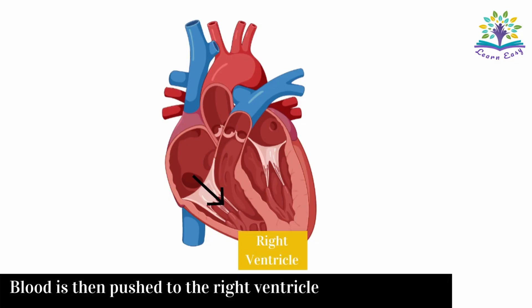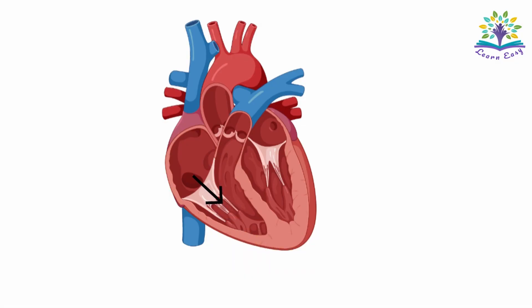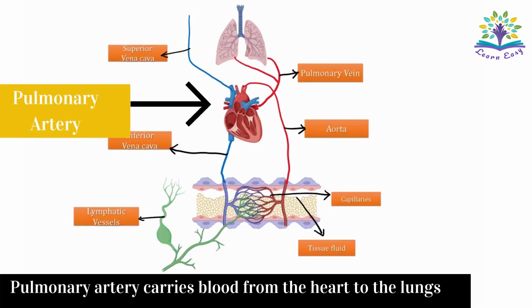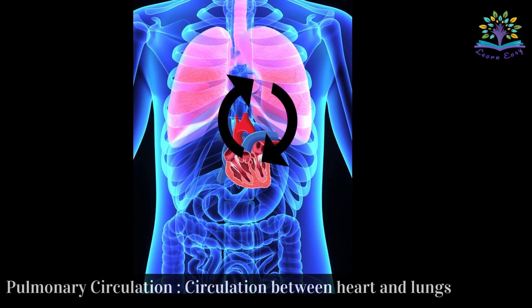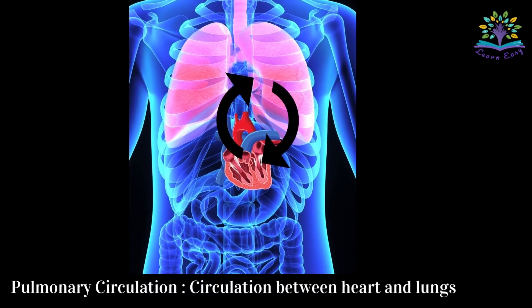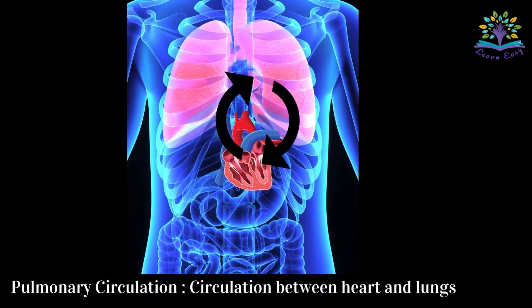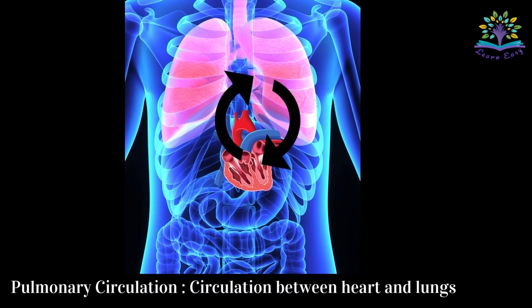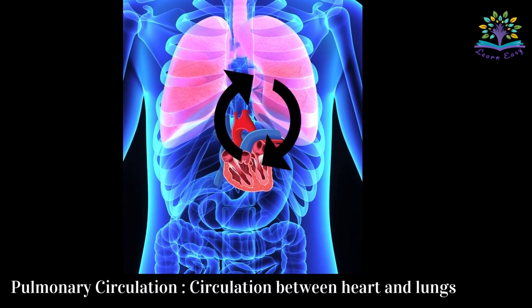This blood is pushed to the right ventricle, which is then transported to the lungs through the pulmonary artery, where it gets oxygenated again. The circulation that happens between the lungs and the heart using the pulmonary artery and pulmonary vein is known as the pulmonary circulation.